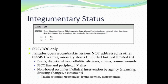M1350 asks whether the patient has a skin lesion or open wound — excluding bowel ostomies — that is receiving intervention by the home health agency. This is collected only at start of care and resumption of care. It includes open wounds and skin lesions not addressed in other OASIS C-1 integumentary items, such as burns, diabetic ulcers, cellulitis, abscesses, edema, trauma wounds, PICC line and peripheral IV sites, tracheostomies, and urostomies.